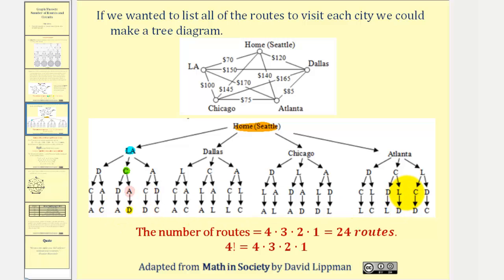But we're going to be more concerned about circuits. So to form circuits, we actually have to return back to the home city of Seattle. When we convert routes to circuits, we do have repetition. Half of the circuits will be duplicates in the reverse order. So we'll have to divide the number of routes by two to determine the number of circuits in a complete graph.